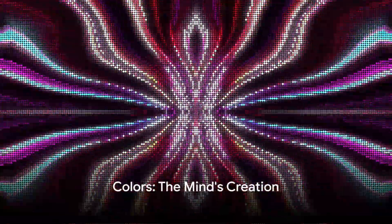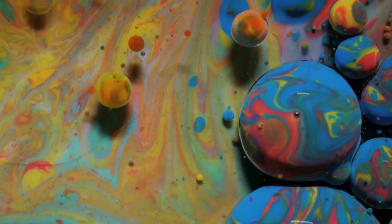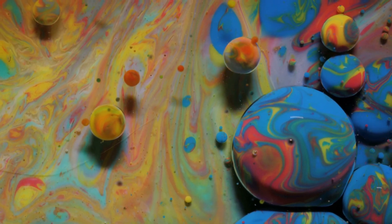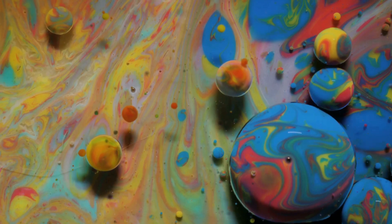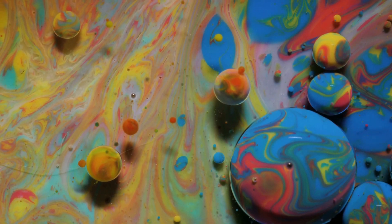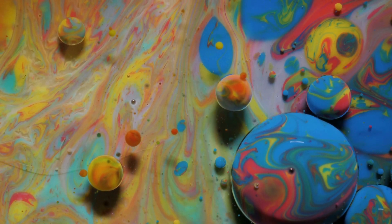To summarize, color is a fascinating phenomenon that, contrary to what we might believe, does not exist in the physical world. It is a construct of our mind, created through the interpretation of different wavelengths of light by our brain. The vibrant hues we see are the result of our brain's incredible processing power, turning colorless light into the colorful world we perceive.